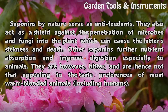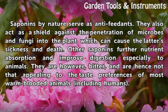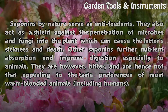Saponins by nature serve as anti-feedants. They also act as a shield against the penetration of microbes and fungi into the plant, which can cause the latter's sickness and death. Other saponins further nutrient absorption and improve digestion especially in animals. They are however bitter, and are hence not that appealing to the taste preferences of most warm-blooded animals including humans.